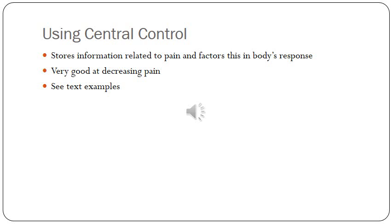Starting on page 157, there are text examples of different things that influence the pain experience. For example, the sight of blood intensifies pain. With children, an injury may seem mild at first, but when they see blood, the visual input creates a more noxious stimulus — suddenly they start crying and are upset. There are a couple of other examples showing how visuals can modify or influence someone's pain experience.